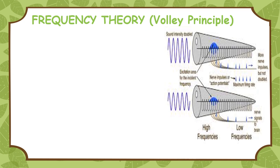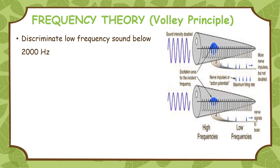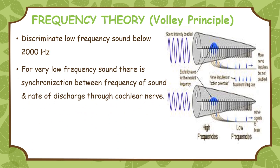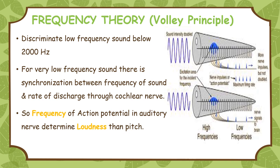Frequency theory, also called the Volley principle: it discriminates low frequency sound below 2000 Hertz. For very low frequencies of sound, there is a synchronization between the frequency of sound and the rate of discharge through the cochlear nerve — this is called the Volley principle of frequency discrimination. The importance of the Volley principle is limited; the frequency of action potentials in a given auditory fiber determines principally the loudness rather than the pitch of a sound.